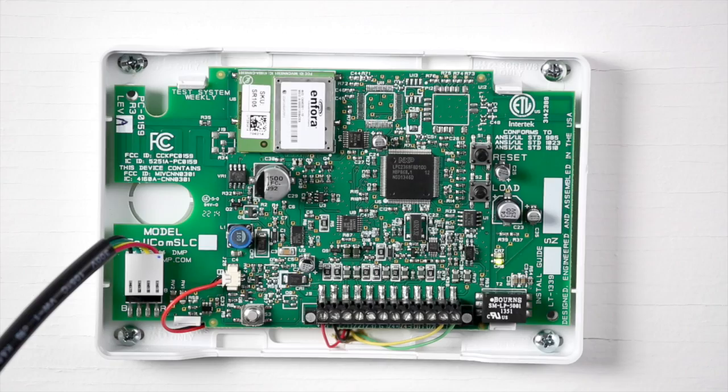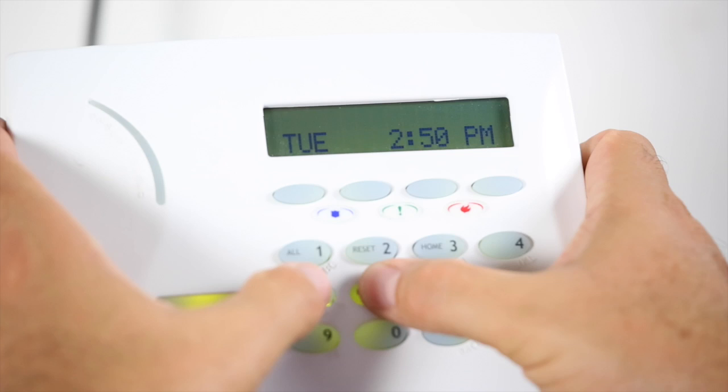To enter the Cellcom SL programmer, press the reset button, then from the programming keypad connected, enter code 6653.